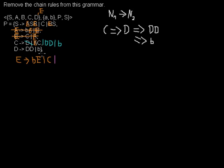I take another color for that. C can derive to E, C can derive to D, and C can derive to B. And now I can take out this chain rule.